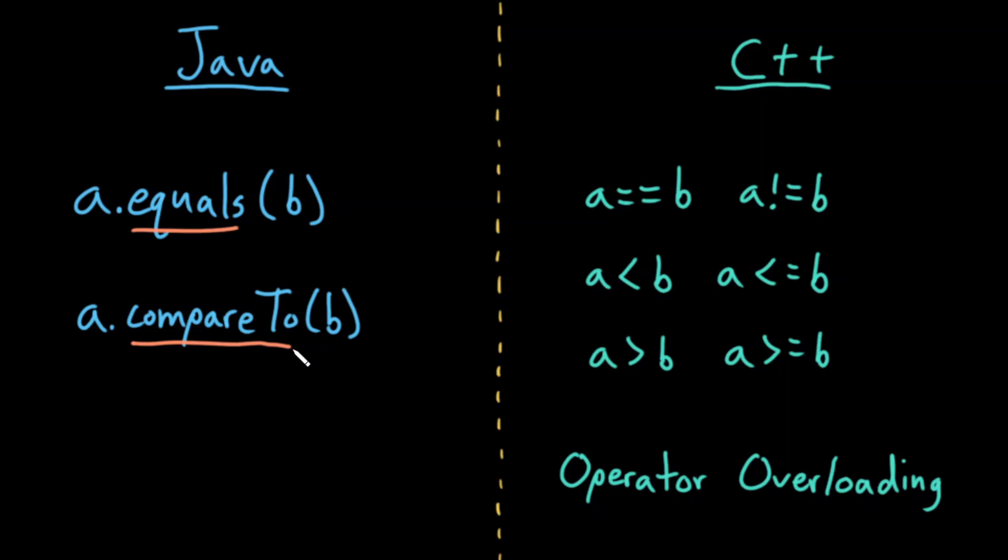In C++, however, even if A and B are objects, I can use the relational operators just fine. This is because in C++, we have what's called operator overloading, in which case, I can write a custom class and define how the different operators should function. So in C++, just use the relational operators as you would with primitives.